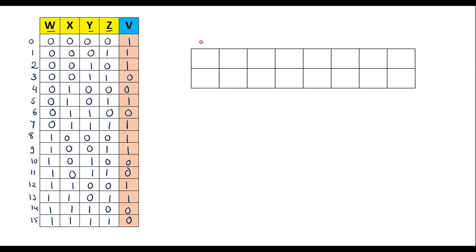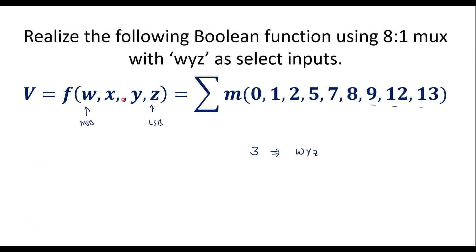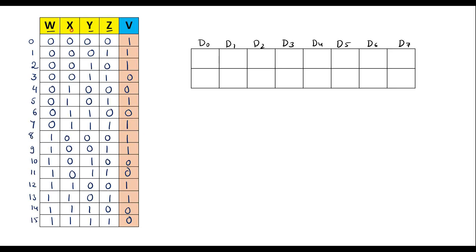Along the column we represent the data input values: D0, D1, D2, D3, D4, D5, D6, and D7. We have variables w, x, y, z, where w, y, z are used for the select lines. The remaining variable is x. We can observe that the value of x is either 0 or 1. For x equals 0, I will use the first row with x̄ (complement of x), and for x equals 1, I will use the second row.